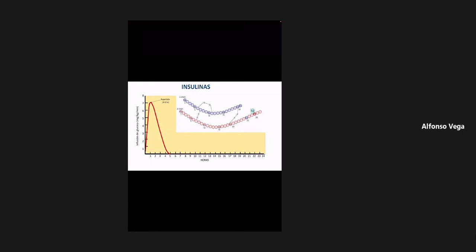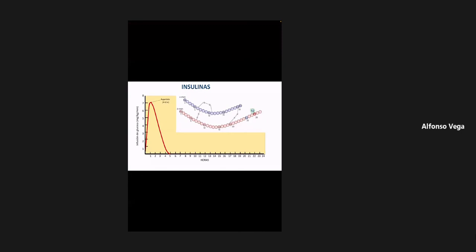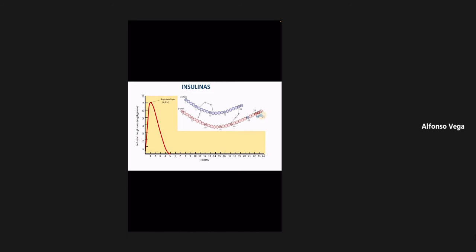La diferencia radica en la modificación de ciertos aminoácidos. En el caso de la insulina aspartato, en la posición 28 de la cadena beta, hay sustitución de la prolina por una molécula de aspartato, por eso se llama aspartato. La lispro es una insulina en la cual hay una inversión entre los aminoácidos en la posición 28 y 29: normalmente la 28 tiene prolina y la 29 lisina, pero en lispro la 28 tiene lisina y la 29 tiene prolina. Por eso se llama insulina lispro.